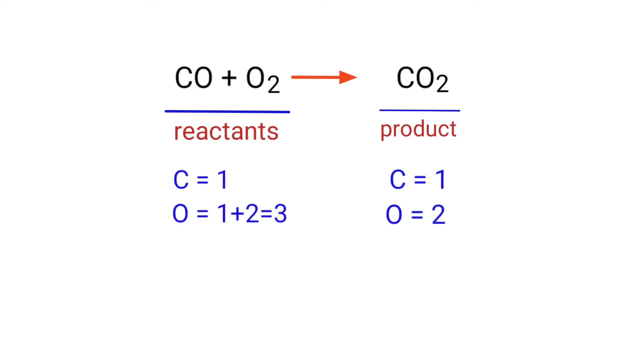In this equation, we need to balance the oxygen atoms. To do this, we make it so there are four oxygen atoms on both sides. To do this, we need to put a coefficient of two in front of CO, and we need to put a coefficient of two in front of CO2.